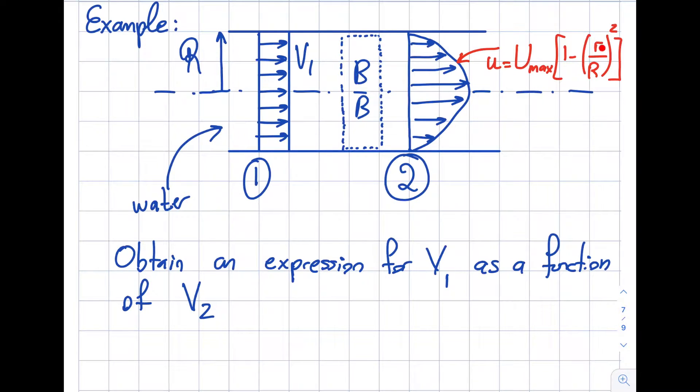So this R is the variable. It's defined from the center line. For instance, R can be equal to capital R then I'm at that point. If I'm at R is equal to capital R divided by 2, I'm right in the middle of it. So basically, this is a constant value, this is a variable, this is a constant value as well.